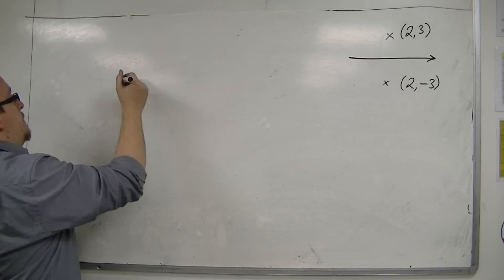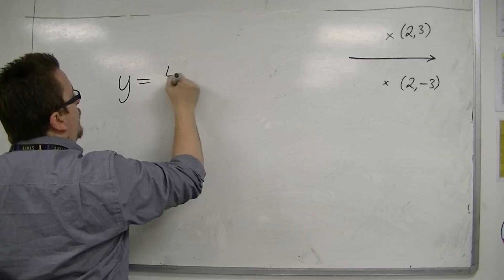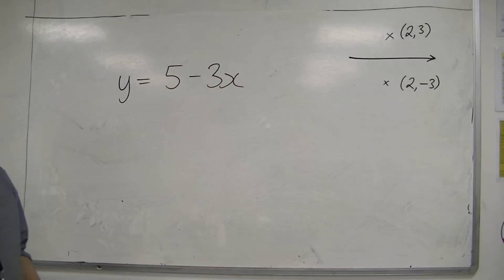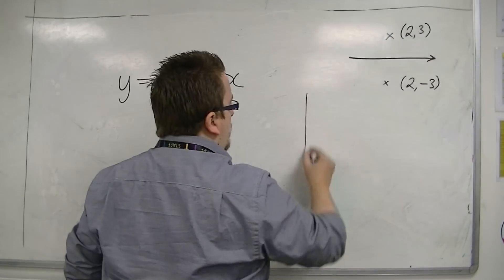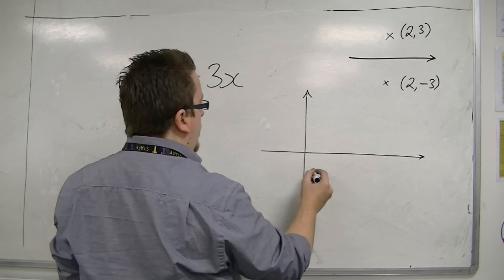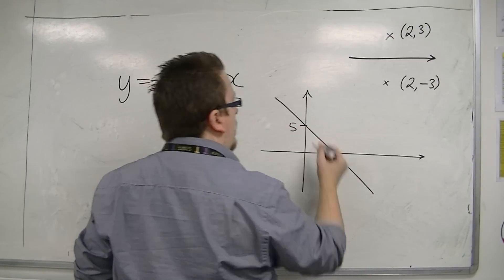For example, if you had something like y = 5 - 3x, then this line, 5 - 3x, will look something like this, going through 5 on the y-axis.